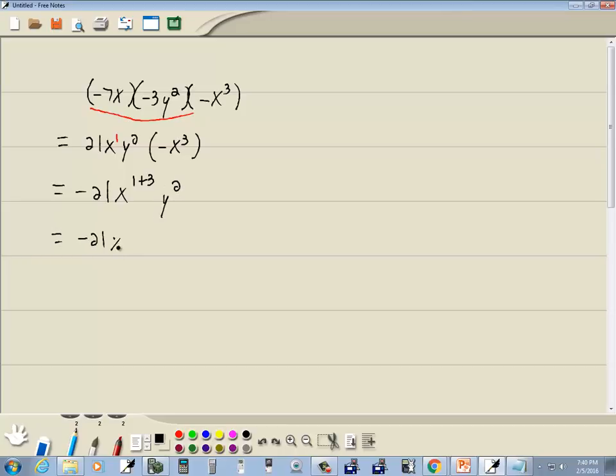So that's going to give us negative 21, x to the fourth, y squared. And that's our answer.